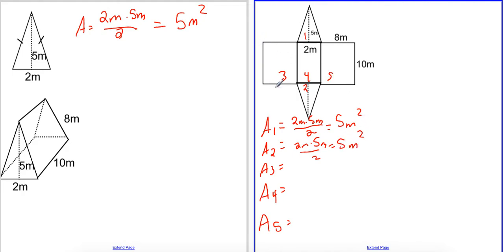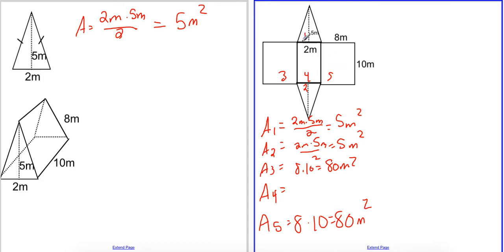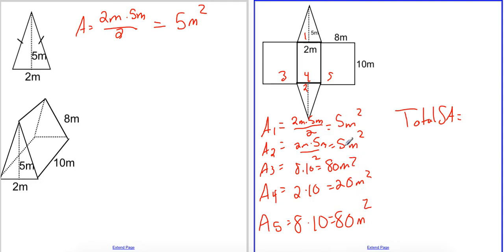Now I'll find the area of the rectangles. My first rectangle has a length of ten meters and a width of eight meters. Both rectangle three and rectangle five have the exact same measurements because those sides are the same length, so eight times ten equals eighty meters squared each. The inside rectangle is two meters times ten meters, giving twenty meters squared. Adding all figures together: five plus five is ten, plus eighty is ninety, plus twenty is one hundred ten, plus eighty gives us one hundred ninety meters squared.